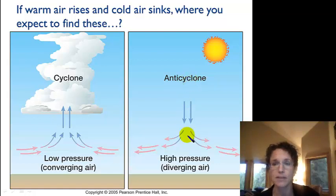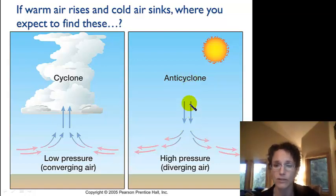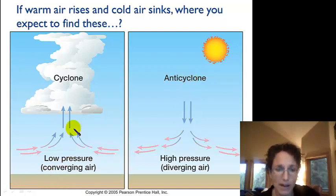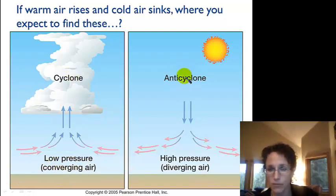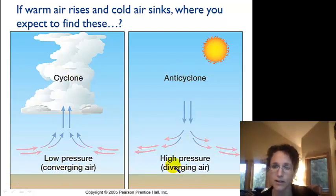For example, this happens at the poles where we have cold air that sinks. So if we have rising air, we have a low pressure at the surface. If we have descending, sinking air, we have high pressure at the surface.